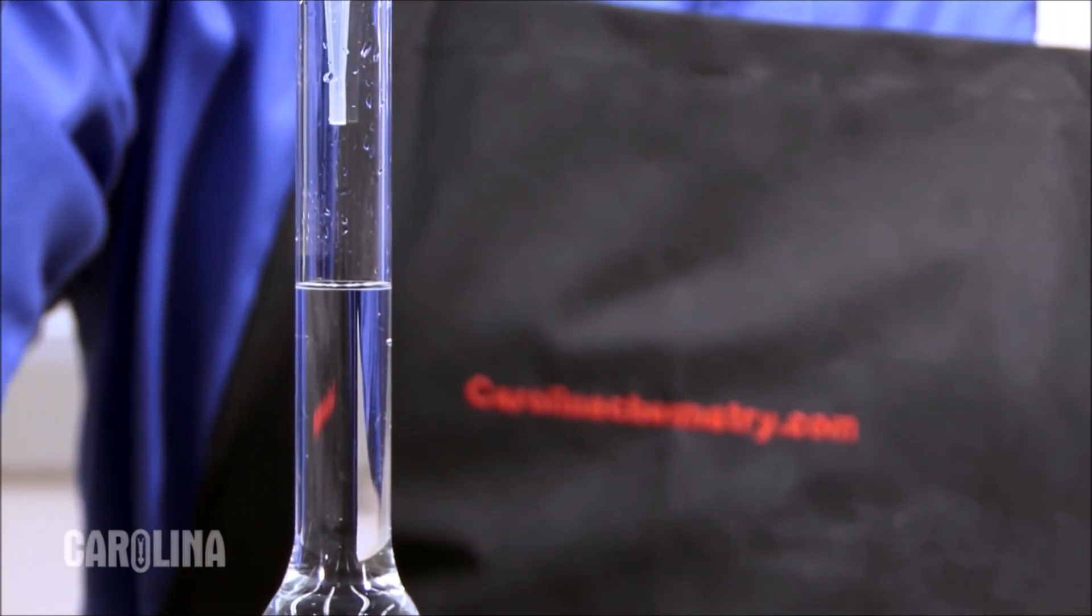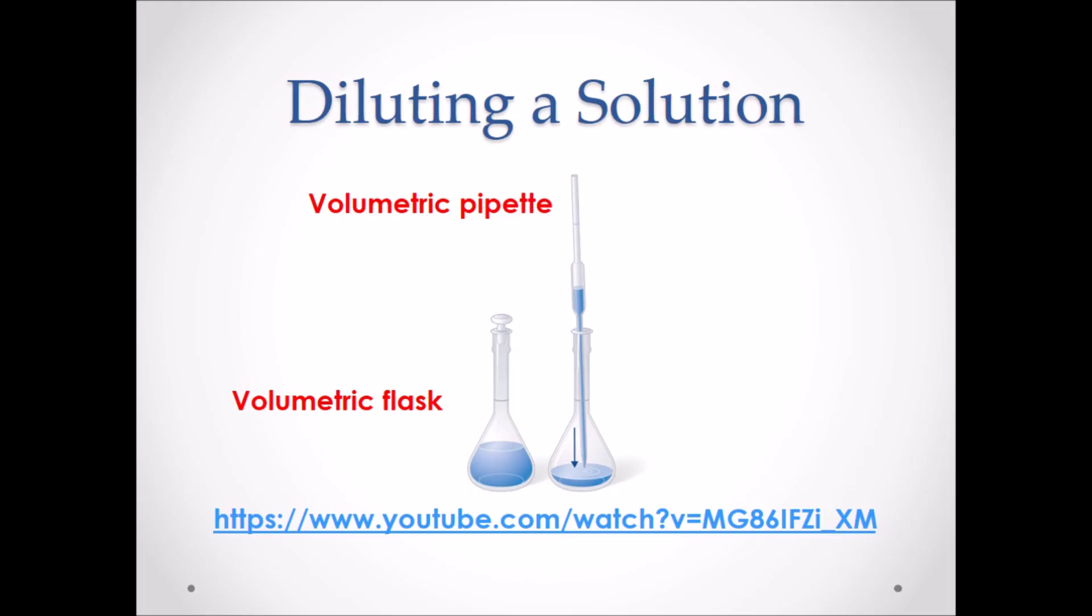You've now learned how to prepare a dilute solution from a stock solution. The reason why a volumetric pipette and flask are used to dilute a solution is because they have a very narrow neck. The smaller the neck on the glassware, the more accurate the measurement.